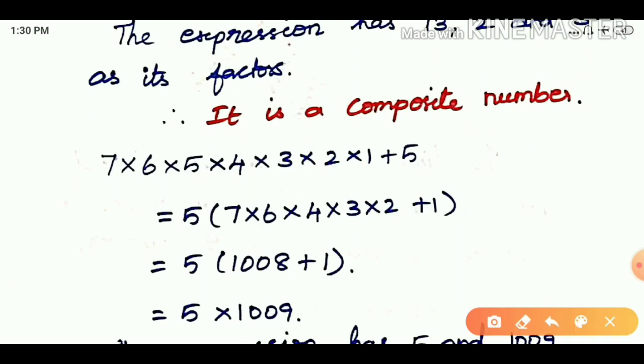For the second expression, 7×6×5×4×3×2×1+5, we can take 5 as a common factor. Taking 5 common: 5×(7×6×4×3×2×1+1). Since any number multiplied by 1 remains the same, we calculate 7×6×4×3×2×1 which equals 1008. So we get 5×(1008+1) = 5×1009.